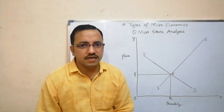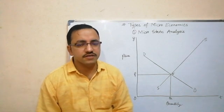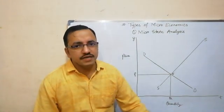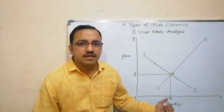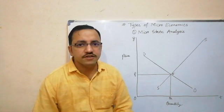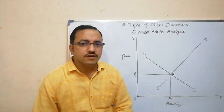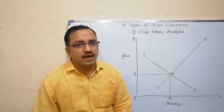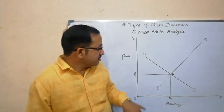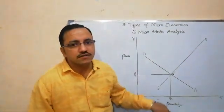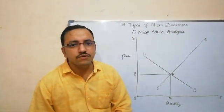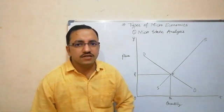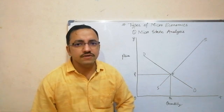We can better understand micro static analysis with the help of the following diagram. In the diagram, DD refers to the demand curve whereas SS represents the supply curve. Both the demand curve and supply curve intersect at point E, where the equilibrium price is OP and the equilibrium quantity is OQ. This equilibrium point E is specified at a particular period of time.